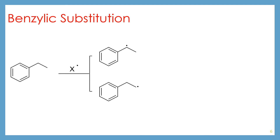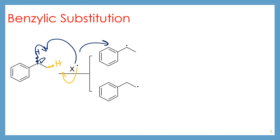Let's take a look at the possibilities when you have a benzylic position. If you react a compound such as ethylbenzene with a halogen radical, you actually have two different places that you can abstract a hydrogen atom from. In the dark blue, we have our benzylic position — if you abstract that hydrogen atom, you would end up with this radical. If you abstract the orange hydrogen atom, you end up with this radical. The difference between the two is really just their relative stability. The top one has a benzylic radical, which is much more stable. You can see that by drawing out the resonance forms.